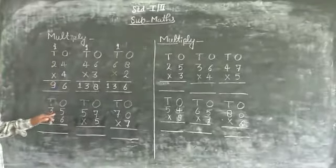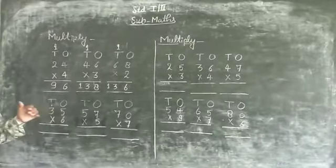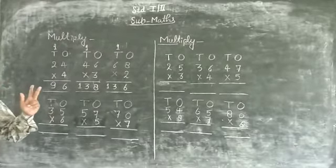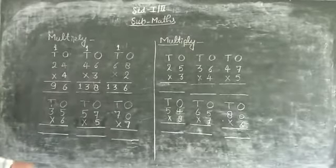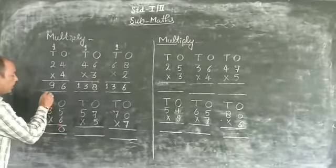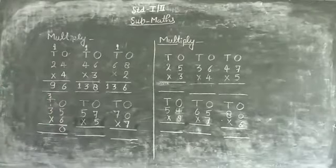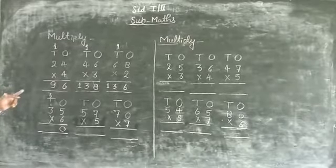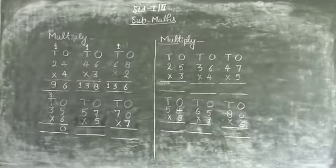Next, 35 multiply 6. 6 times table 5: 6×1=6, 6×2=12, 6×3=18, 6×4=24, 6×5=30. Write 0, carry 3. 6 times table 3: 6×1=6, 6×2=12, 6×3=18, plus 3 carry equals 21.